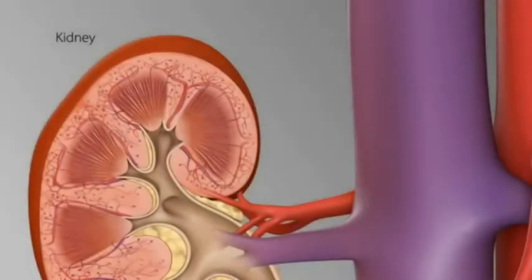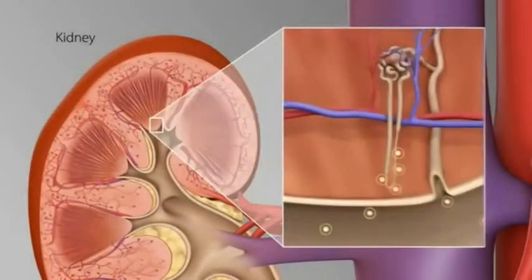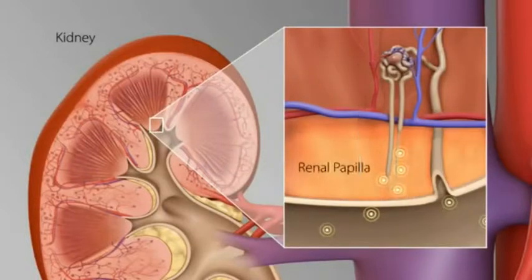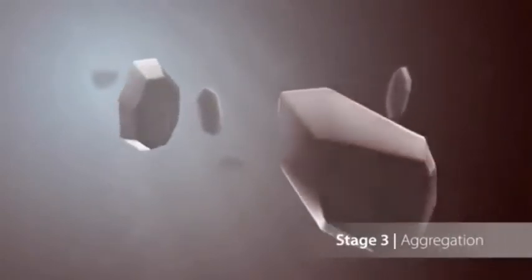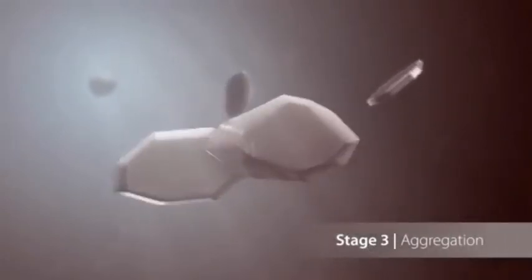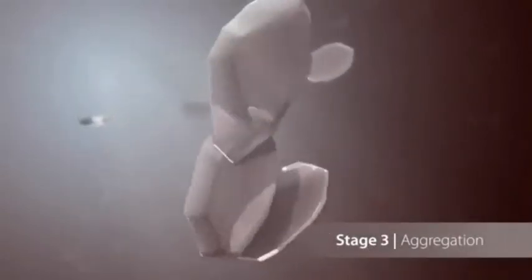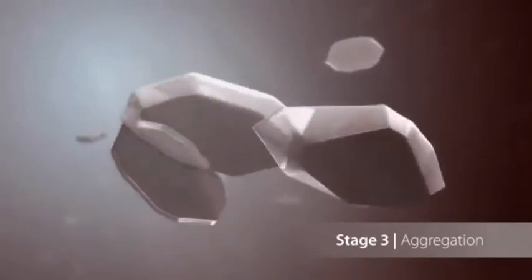The tiny crystal formations travel down the nephron and are usually deposited at the renal papilla, where they undergo the next major phase: growth. Crystals that have already formed then begin to stick together, forming large aggregates. As we can see, crystals can aggregate very quickly.